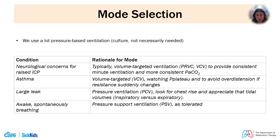There are a few conditions where we have a preference for certain modes. For any neurological concern with raised ICP, we use a volume-targeted strategy — either pressure-regulated volume control or straight volume control — to provide consistent minute ventilation and CO2. For asthmatics, we use volume-targeted mode so we can monitor plateau pressures and avoid over-distention. In the presence of a large leak, you will mostly be limited to pressure-based ventilation, appreciating that tidal volumes will not be particularly accurate.